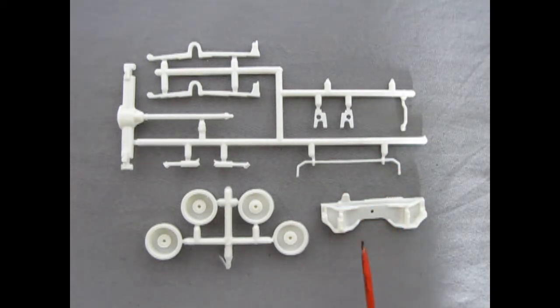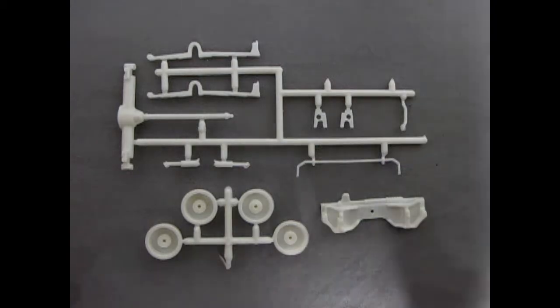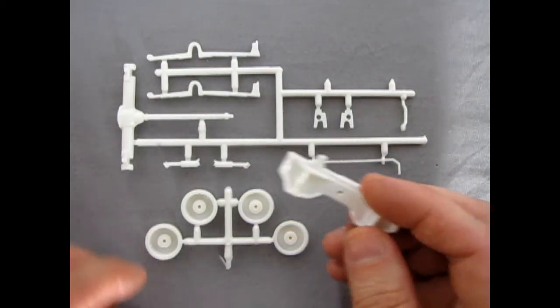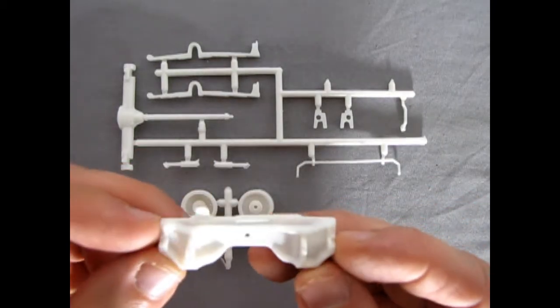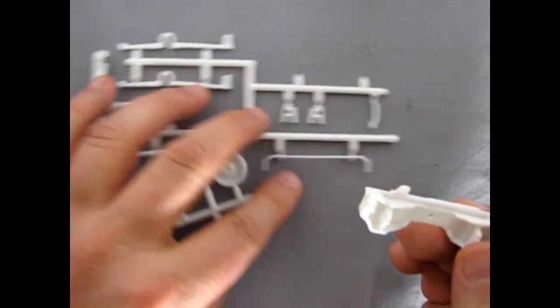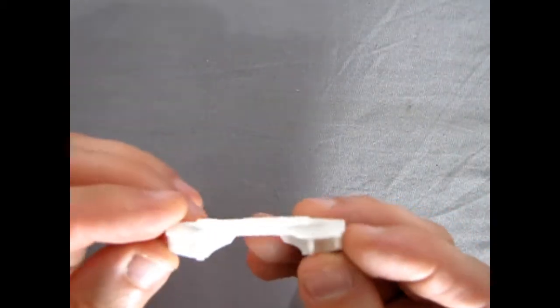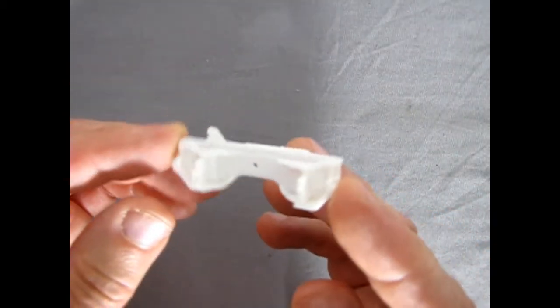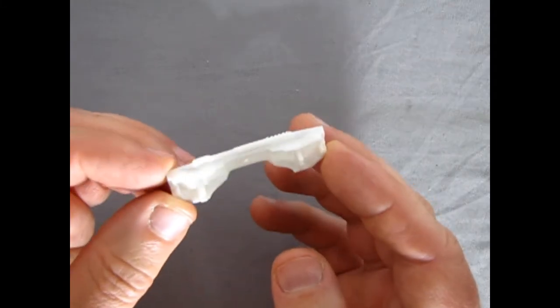And then we have our front end, our front suspension, all molded as one piece. This is using the rack and pinion suspension, which I do believe was unique to American motors only in the 70s. And not many domestic American manufacturers had rack and pinion steering. That was sort of a European invention, I guess.